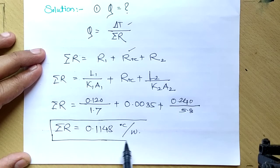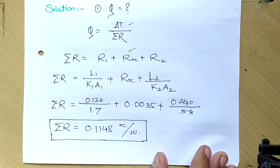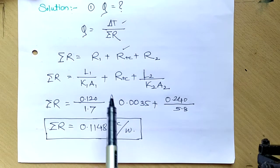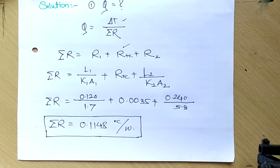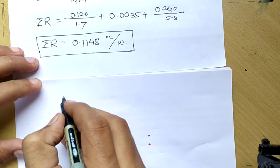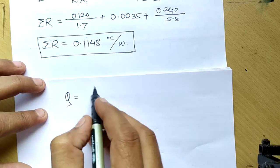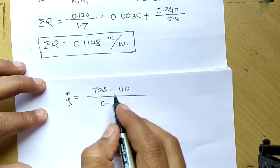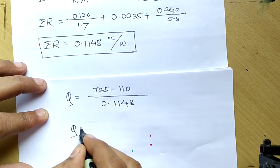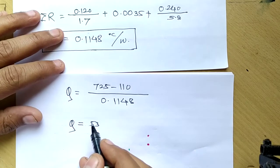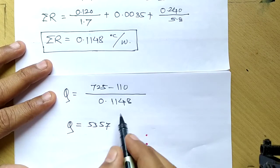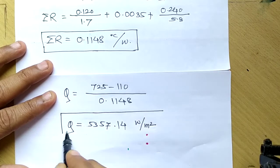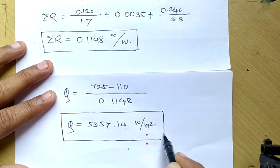Once we have the total resistance, determining heat transfer is straightforward. Using q = ΔT / R_total: q = (725 - 110) / 0.2148. So q = 5357.14 W/m². We write it as watts per meter squared because we considered a wall area of one meter squared. That is the first answer.